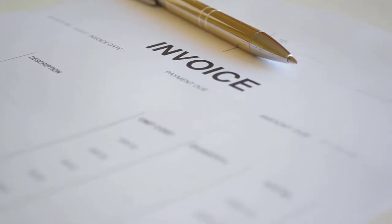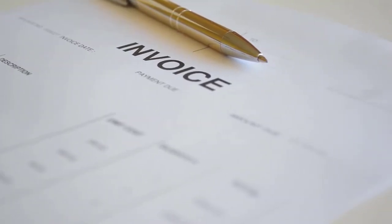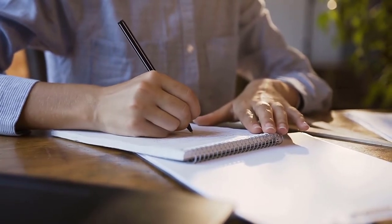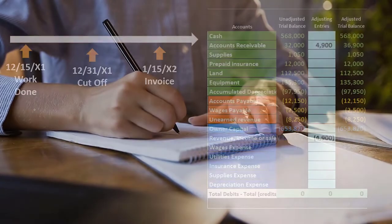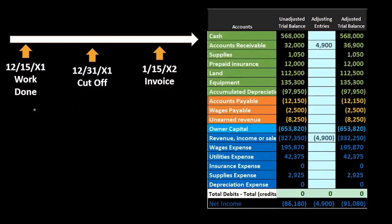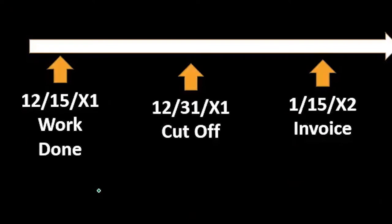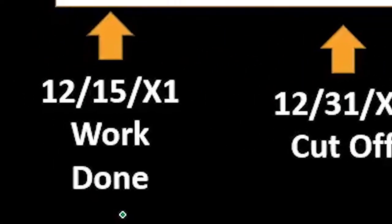This may happen as a normal part of the accounting process because we did the work and then had to bill the client and calculate how much time was spent, so it may be natural that the bill doesn't go out until a later time. But under the revenue recognition principle, we need this work to be recorded prior to the date of the financial statements — it should be recorded as of the date the work was done, as of 12/15.